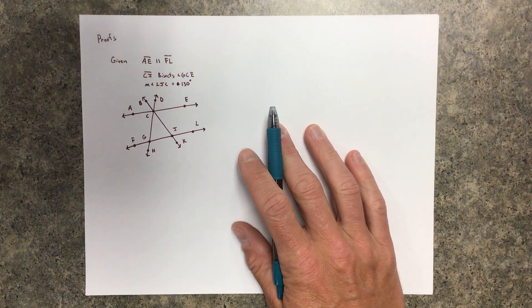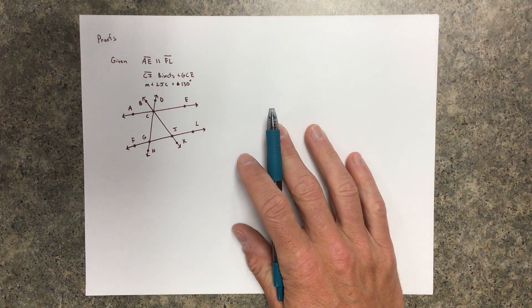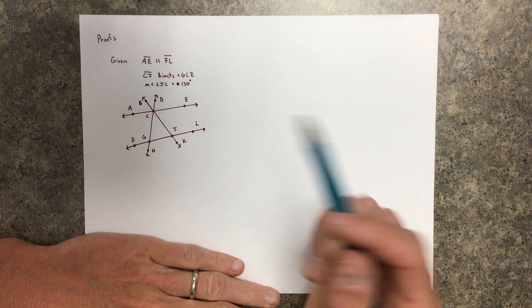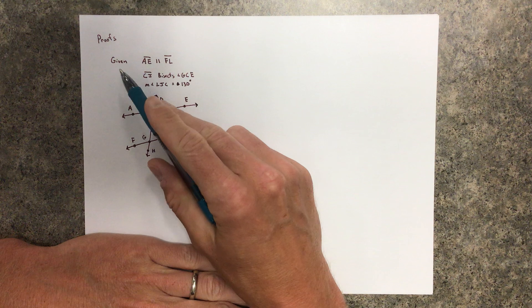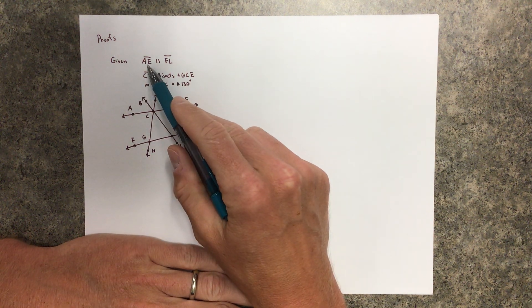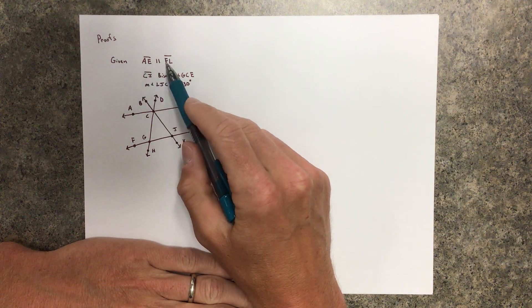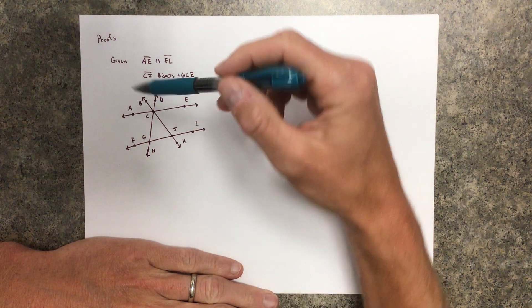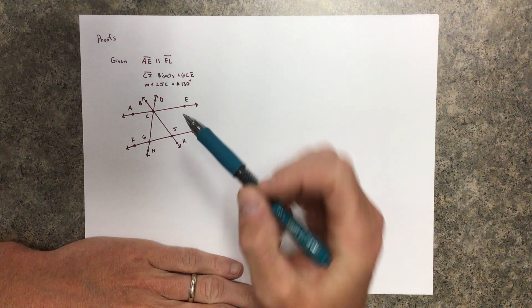Alright, let's do a video on proofs again, and this would be proofs involving parallel and perpendicular lines. Given line segment AE and FL are parallel, we're talking about this line and this line.